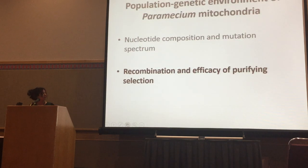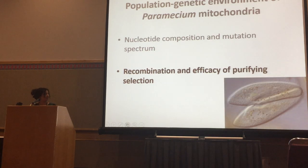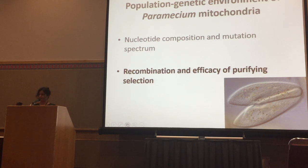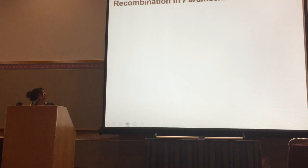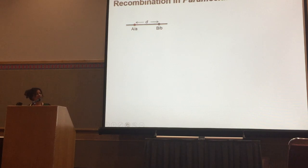Next I will talk about recombination and the efficacy of purifying selection. This is interesting because when Paramecium have sex, they exchange their micronuclear DNA, but it was not clear if they also exchange their mitochondrial DNA. We tried to look at the population data to test for the presence of recombination. First, we calculated linkage disequilibrium between pairs of sites with some distance d, using the standard statistic r-squared, where p is the allele frequency of that particular allele.